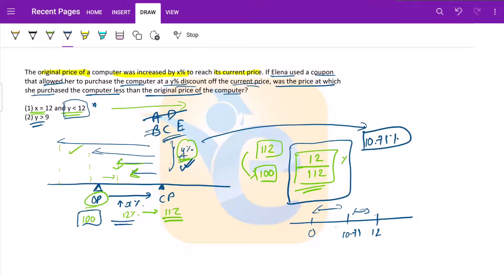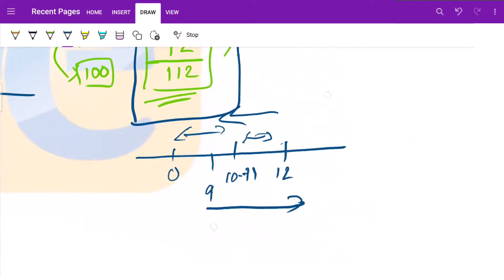Now moving between C and E. If we combine both, Y is less than 12, but Y is also greater than 9. So this is 9 and this is greater than 9. What we had initially was Y is less than 12. This region. Now also what we have is Y is greater than 9. So effectively this region, this green region that we have is our value.